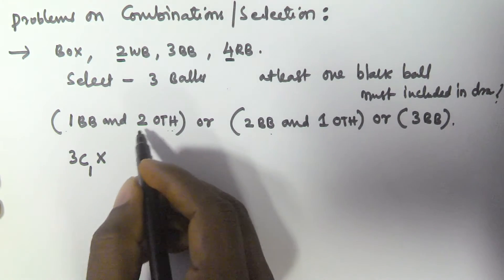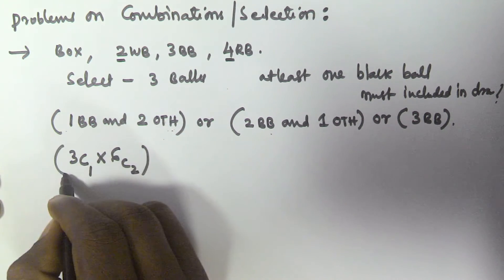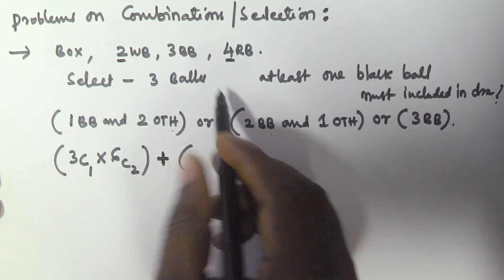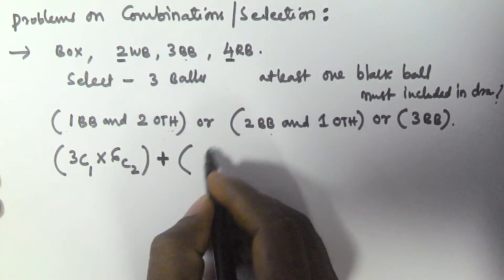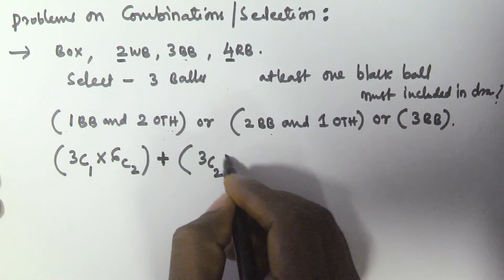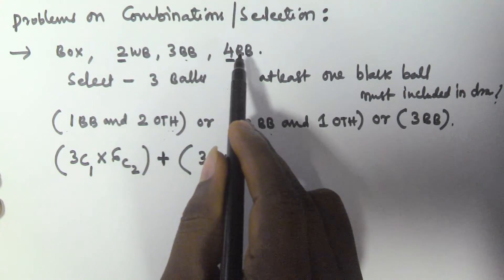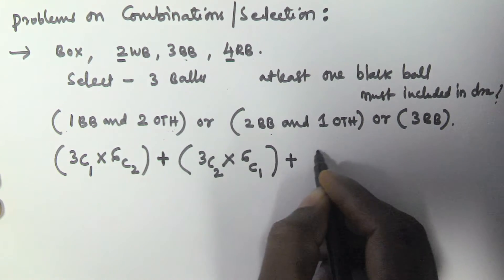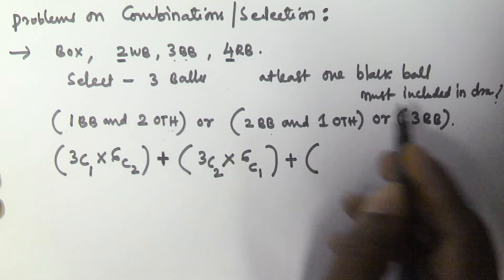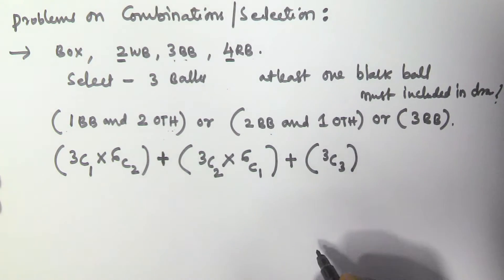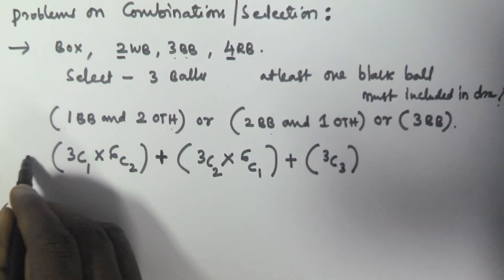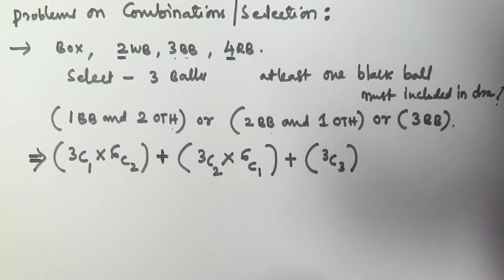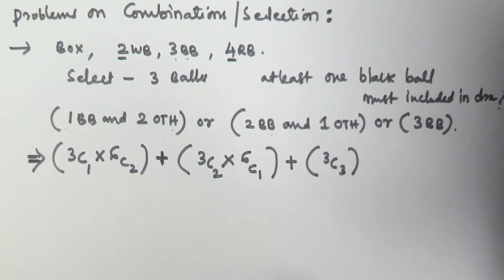So the formula is: 3C1 × 6C2, plus — since 'or' means we add — 3C2 × 6C1 for two black balls and one other, plus 3C3 for selecting all three black balls. This gives the total number of selections containing at least one black ball.